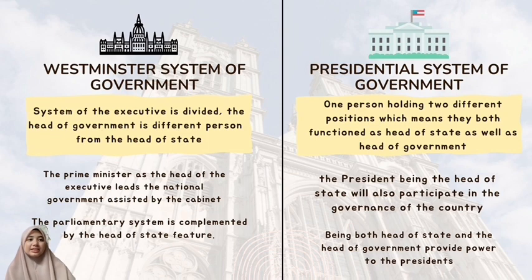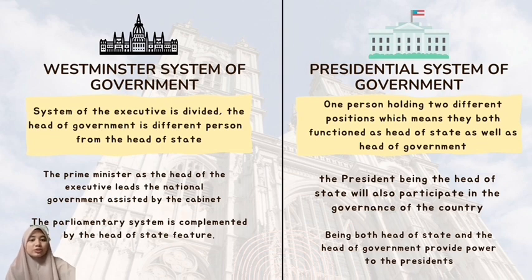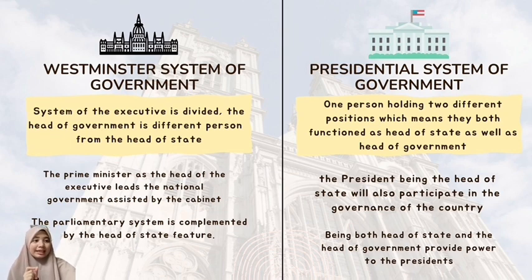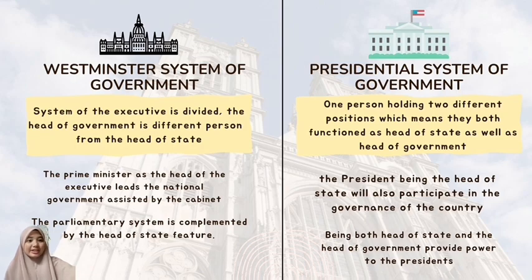Meanwhile, presidents under the presidential system of governance are one person holding two different positions, functioning as both head of state and head of government. The president, being the head of state, also participates in the governance of the country — the executive is a unified single entity. This aspect of governing in the presidential system is considered the most significantly defining element that characterizes this system and differentiates it from the parliamentary system, which has two persons exercising two different roles.